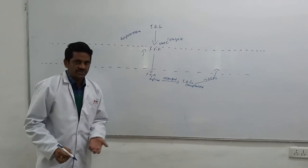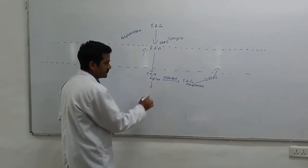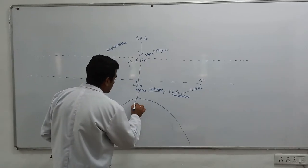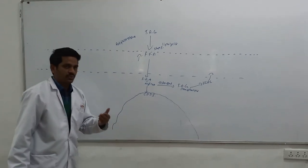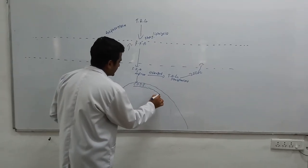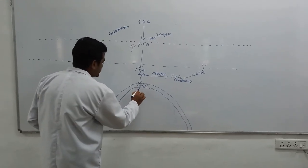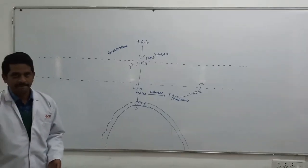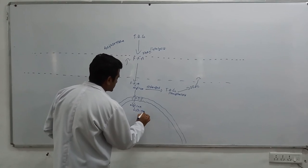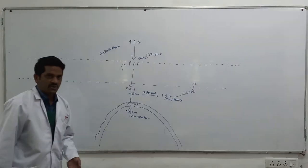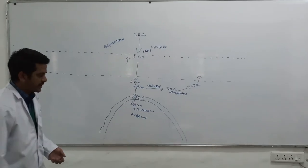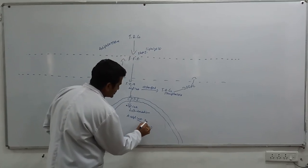When there is a fasting state, the acyl-CoA which is there — in the mitochondrial membrane, there will be carnitine palmitoyltransferase-1 (CPT-1). This acyl-CoA cannot be transferred inside the mitochondrial membrane on its own. So, CPT-1 attaches to this acyl-CoA and makes it enter into the mitochondrial matrix, where it is subjected to beta-oxidation. Beta-oxidation leads to acetyl-CoA, and the acetyl-CoA is subjected to ketogenesis, so ketone bodies are synthesized.